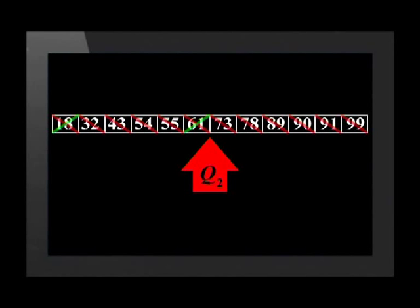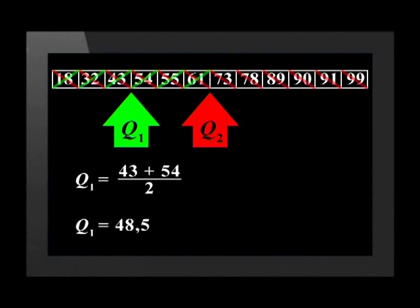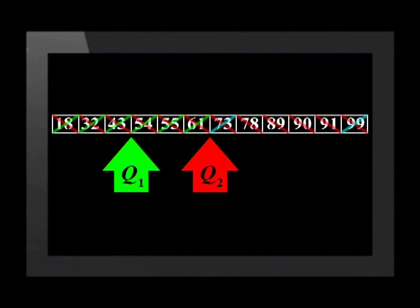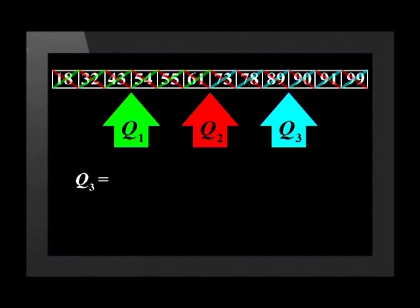We find the lower and upper quartiles using the same method. We cross out the numbers between the beginning and Q2 until we find the middle — this is where Q1 is. The lower quartile is the median of the lower half of the data, which equals 48.5. The upper quartile Q3 is equal to the median of the upper half, so (89 + 90) ÷ 2, which equals 89.5.